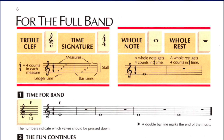Let's start lesson one on page six of the Standard of Excellence by looking at the upper left-hand corner — treble clef. This is important because it's the clef that determines the names of the spaces and lines of the staff.